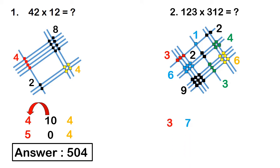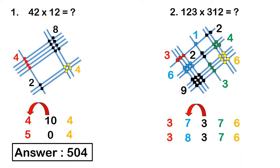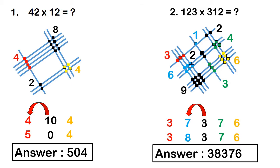Red indicates the ten-thousands digit. Carrying 1 to 7 gives 8. Then 3, 7, 6. Writing the numbers together, the exact answer is 38,376.